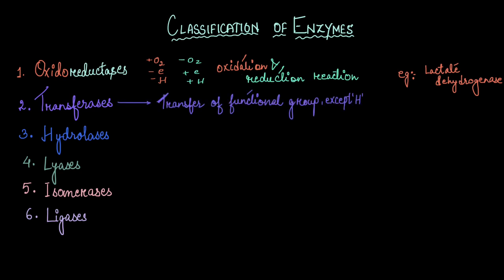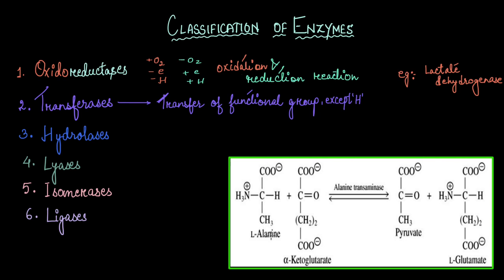Let's look at an example. Here we have alanine and alpha-ketoglutarate. Alanine transfers its amine group to alpha-ketoglutarate. Thus alanine becomes pyruvate and alpha-ketoglutarate with its amine group becomes glutamate. This reaction is catalyzed by alanine transaminase—transaminase because it is transferring an amine group. So we got an example of transferases, which is alanine transaminase.